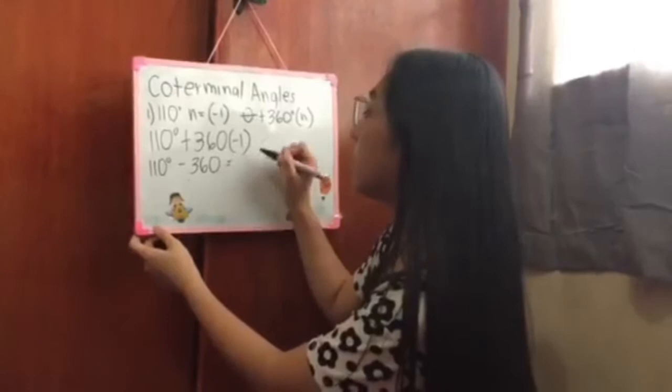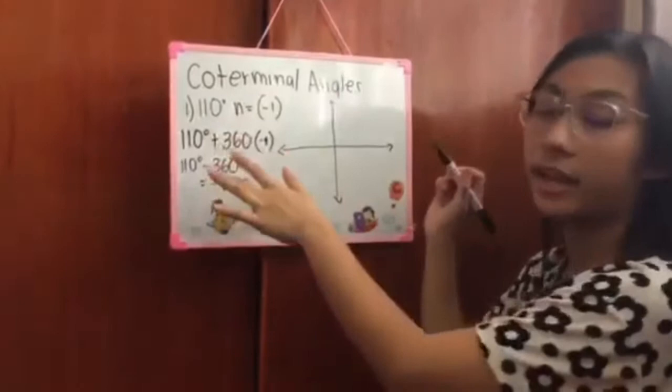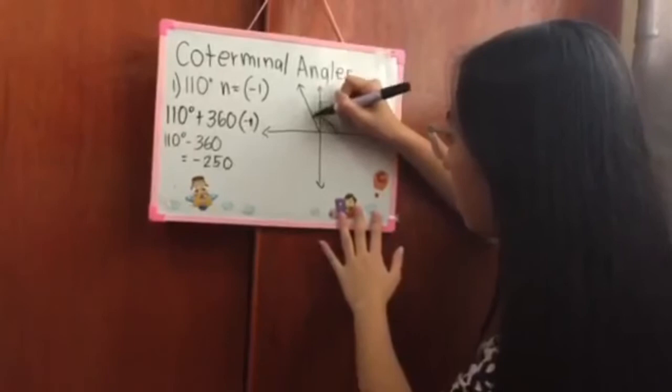So that's the answer. Then we need to make a sketch. We need to place the given angle. So for 0 plus 90, the 110 exceeded 90, so it's in this area. Then we angle it. This is the given angle of 110. Then the answer is negative 250.